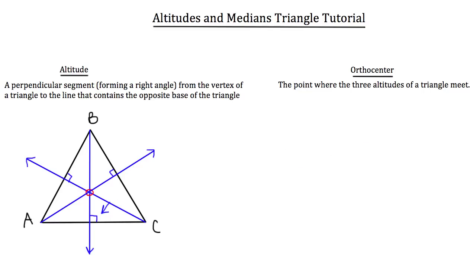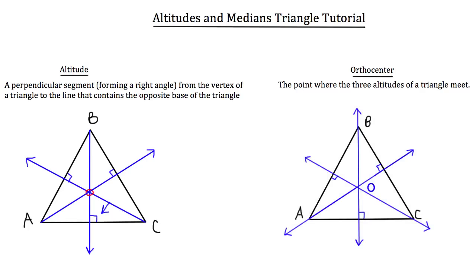Let's take a look at the orthocenter for triangle ABC. We've labeled this orthocenter O, right here in the triangle. There's nothing in particular that's critical to know right now about the orthocenter, just that it's the point where the three altitudes of a triangle meet.